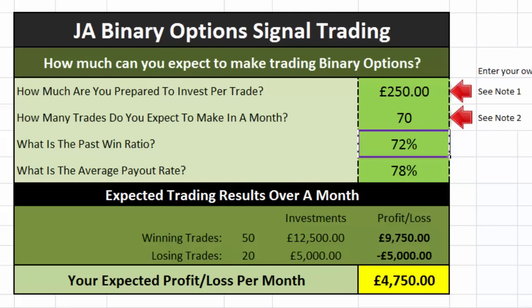But that's where we're at. So hopefully you'll have a bit of fun with that. Get inspired, work out that the maths work for you. Look at the John Anthony signals — over 3,700 trades — you've worked the numbers over the long term.